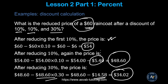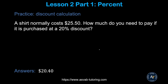Try this practice problem: a shirt normally costs $25.50 — how much do you pay with a 20 percent discount? Convert the percent to decimal, multiply by $25.50 to find the discount amount, then subtract from $25.50. You should get this answer.